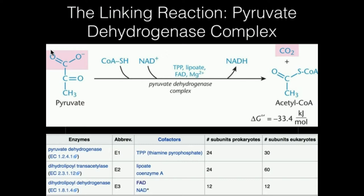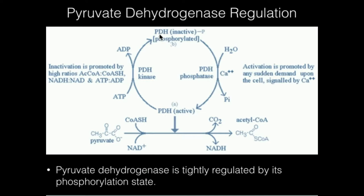Let's talk about its covalent regulation. It turns out pyruvate dehydrogenase, when it's phosphorylated, is inactive. When it's dephosphorylated, it's active. So you can imagine there's going to be a kinase and a phosphatase that are going to regulate the interplay between phosphorylation states. We can inactivate pyruvate dehydrogenase by phosphorylating it through a PDH kinase, as you would expect. We can then remove that phosphate by a PDH phosphatase and that reactivates the enzyme. But it wouldn't make sense just to have a kinase and a phosphatase — what controls that? If these enzymes themselves were not regulated, that'd just be a random kinase phosphatase. Well, there's even a higher level of regulation beyond that — PDH kinase and PDH phosphatase are themselves regulated.